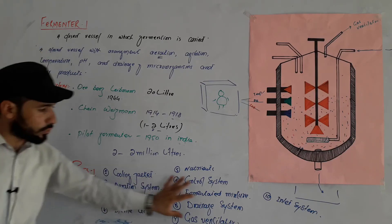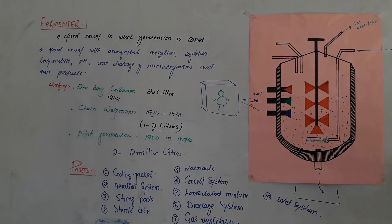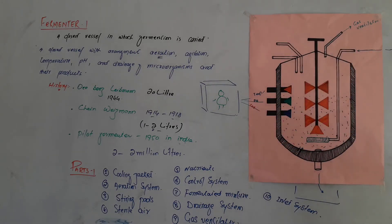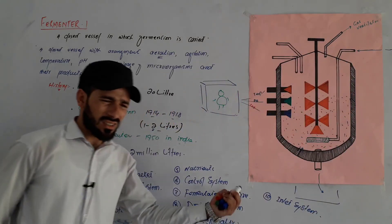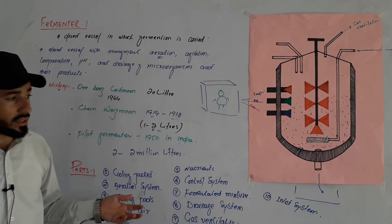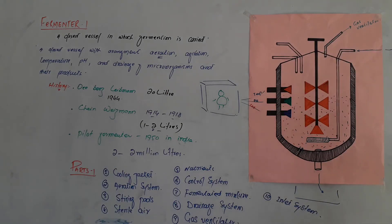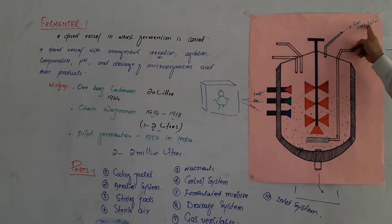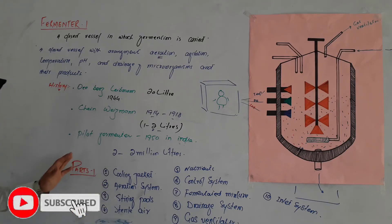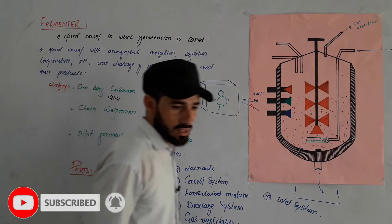Number ten is the inlet system — for adding reactants into the fermenter. So the parts of the fermenter are: cooling jacket, aeration system, stirring pads, sterile air inlet, nutrients inlet, control system with sensors, fermented mixture outlet, drainage system, gas ventilator, and inlet system. These are used in industries and factories to produce vaccines, drugs, and other products at high industrial levels.